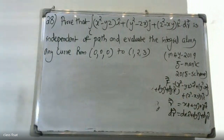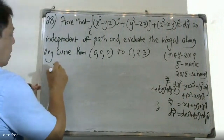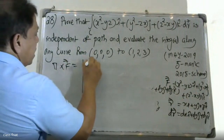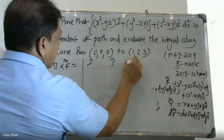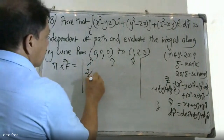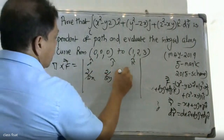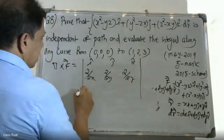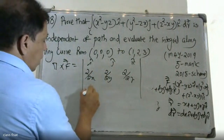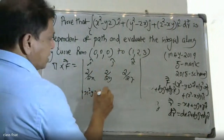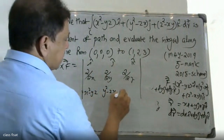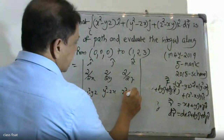Computing the curl: for the i component, ∂(z² - xy)/∂y - ∂(y² - zx)/∂z; for the j component, ∂(x² - yz)/∂z - ∂(z² - xy)/∂x; for the k component, ∂(y² - zx)/∂x - ∂(x² - yz)/∂y.